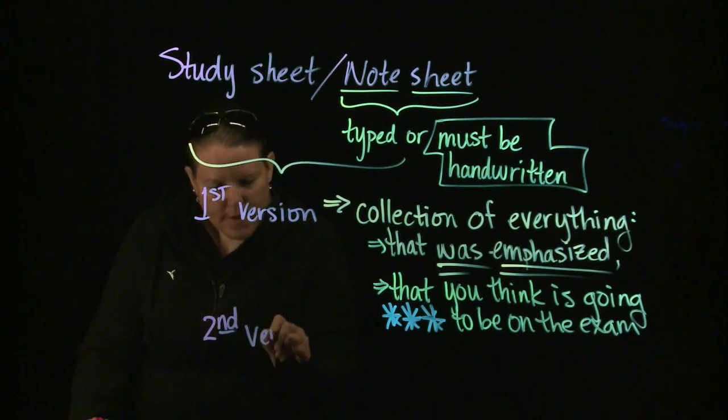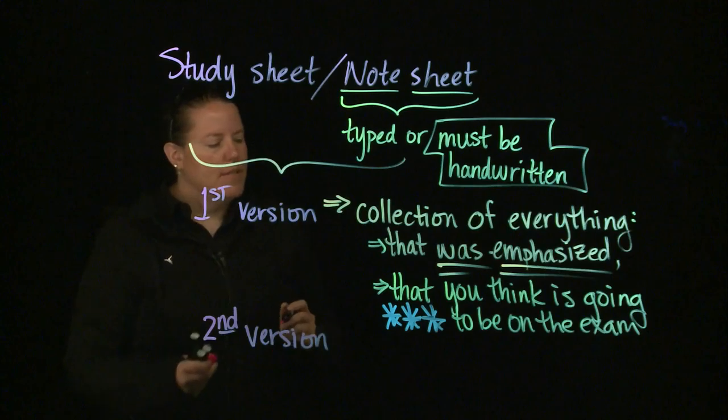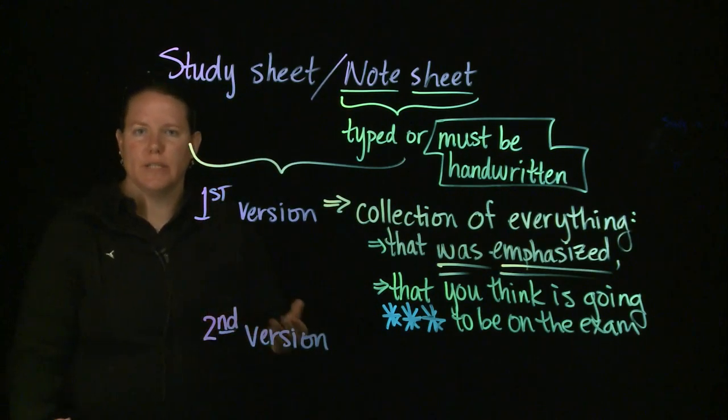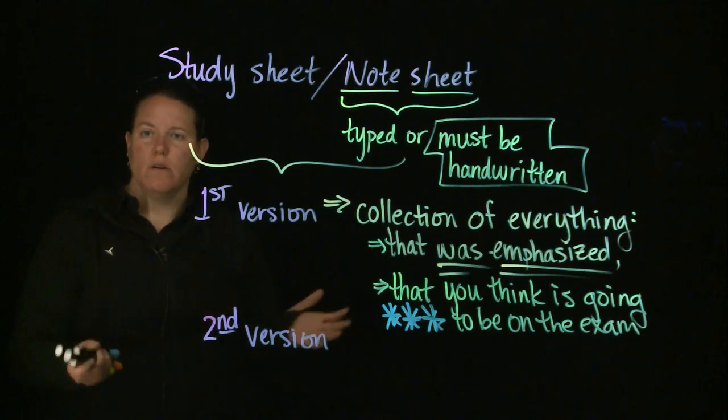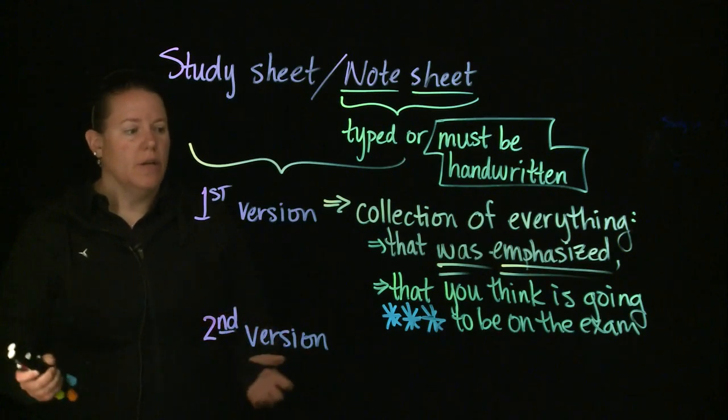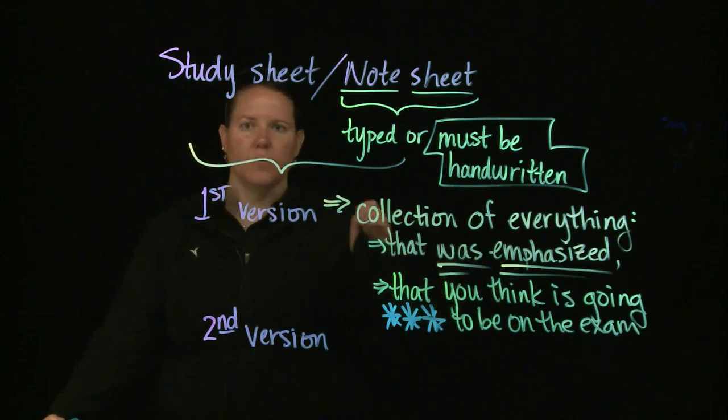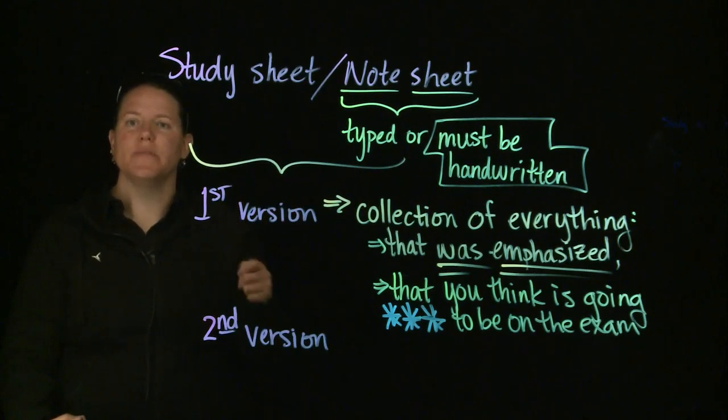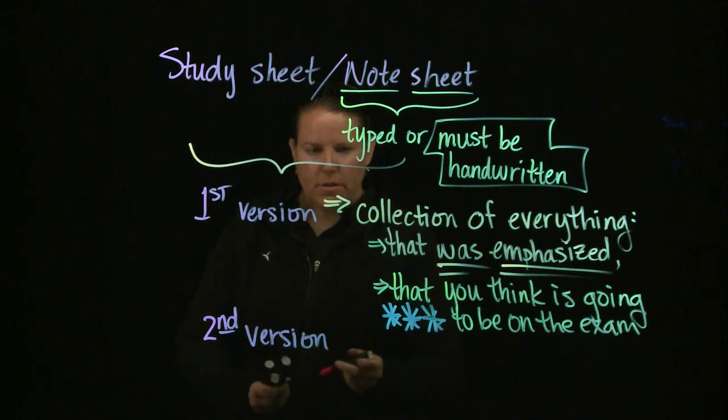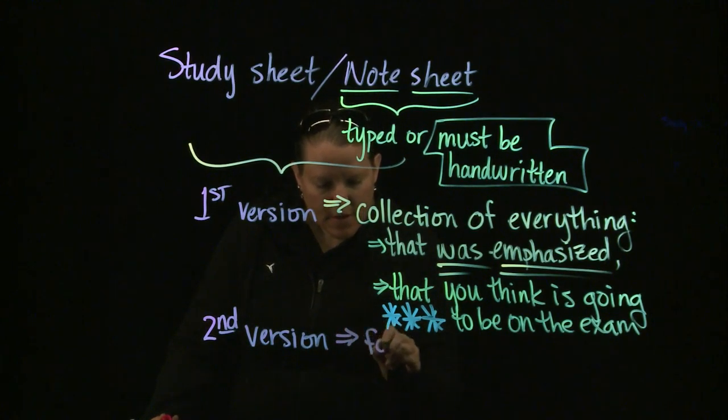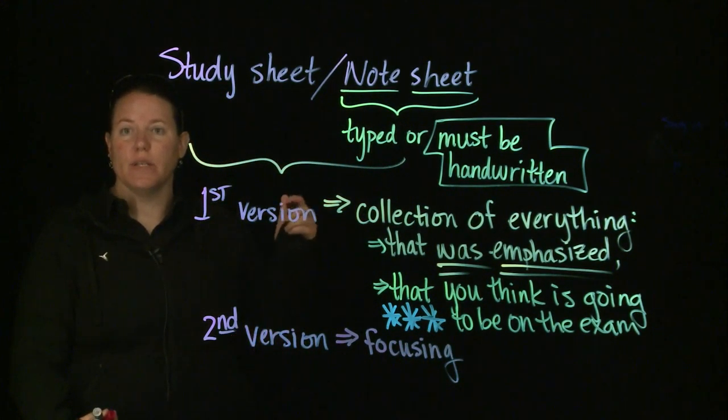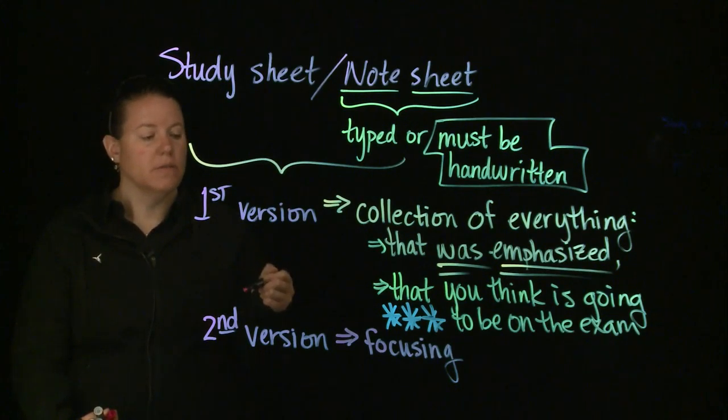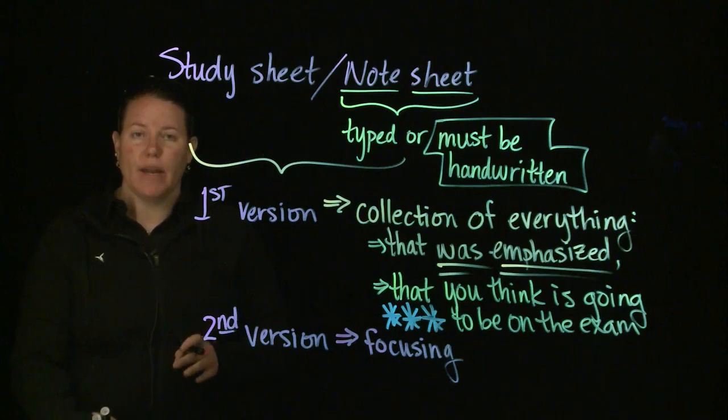The second version. The second version is where you start to hone it down. Maybe the collection of everything wasn't on a three inch by five inch note card, and that's all you have for the exam. So the second version hones down. It kind of collects the information. You go through several pieces of, 'okay, do we really think this is going to be on the exam? And if so, how much of the exam is it going to be?' The second version is focusing. You focus on what's the most important stuff. The stuff that either is the most important or the stuff you're most likely to forget. You focus your information based off of that. And then you color code it.